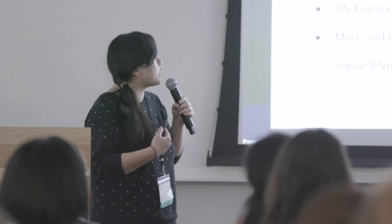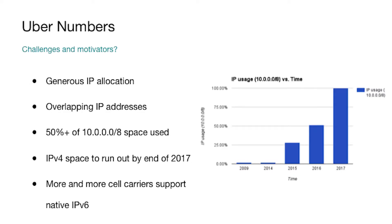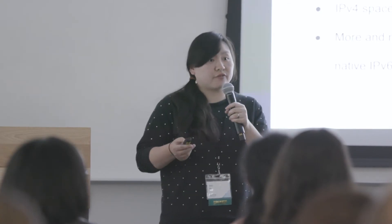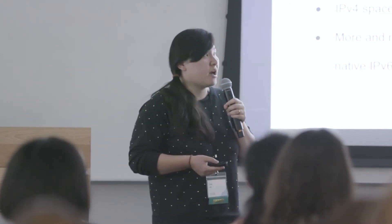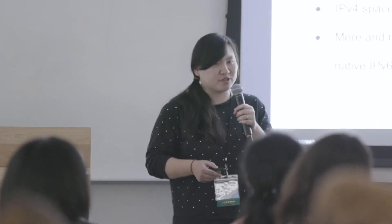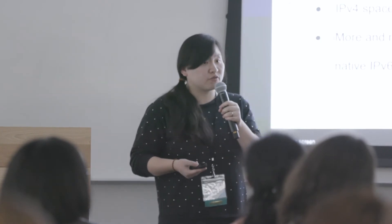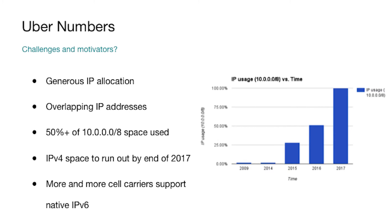What are some of the challenges and motivations we've seen from an IP resource perspective during this growth? Our historical IPv4 allocation has been pretty generous — each server rack, for example, has been allocated 256 addresses, although we have no more than 48 servers in a rack. Another challenge is overlapping IP addresses as we started to merge with different organizations. By now, we've used more than half of over 10 /8 IPv4 IP spaces, and it's estimated that by end of 2017 we may run out of IPv4 space. On the other hand, more and more cell carriers are starting to support native IPv6 traffic.